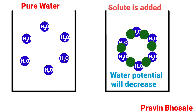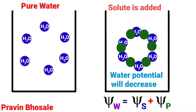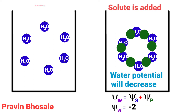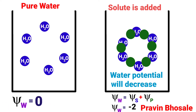Let's see the formula of water potential. Water potential equals solute potential plus pressure potential. Pressure potential is the pressure exerted by the system. Since the container is not applying any pressure, if solute potential is minus 2 — because it is always less than zero — water potential will be minus 2. So for pure water, water potential is zero, and if we add solute, it decreases.